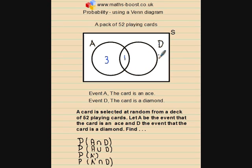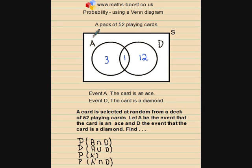This closed curve D represents the event that the card drawn is a diamond. There are 13 diamonds in the pack, so this closed curve needs to contain 13 outcomes. We've used one already, so the balance is twelve. Finally, the entire sample space must contain all 52 outcomes. We've accounted for sixteen, so the remaining space outside both curves has thirty-six outcomes. That completes populating the Venn diagram.